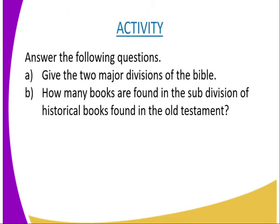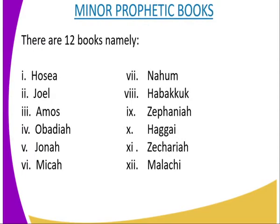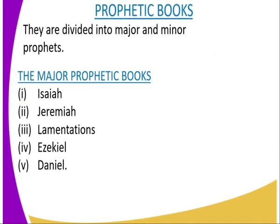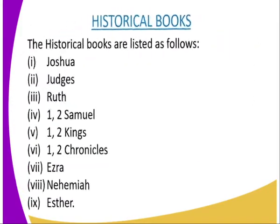So we have seen the books in the Old Testament. We have seen the Bible is divided into two major divisions: the Old and the New Testament. Today we have looked at the Old Testament books — the books of the Torah or Pentateuch, the historical books, the poetic books, and the prophetic books.